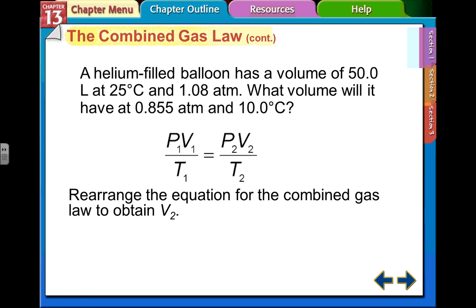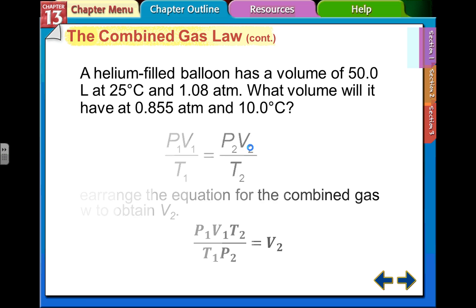So you can rearrange the equations to solve for V2. If we multiply both sides by T2, we get T2 on top. That gets rid of this on this side. We divide by P2. It puts P2 on the bottom. So we get these three variables on the top, these two variables on the bottom to solve for the volume, the new volume.